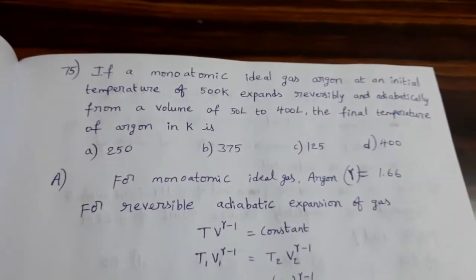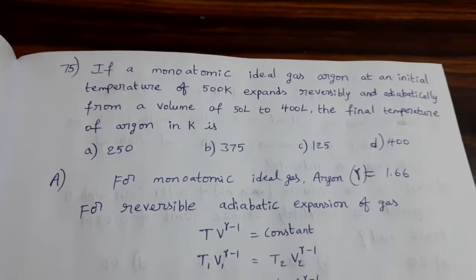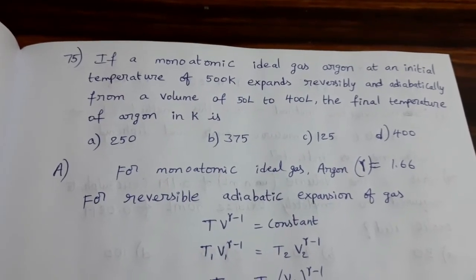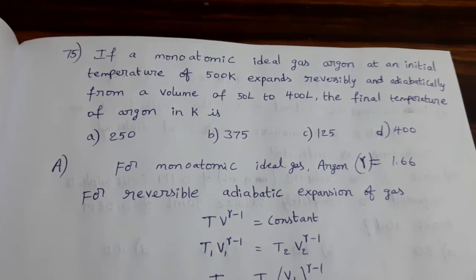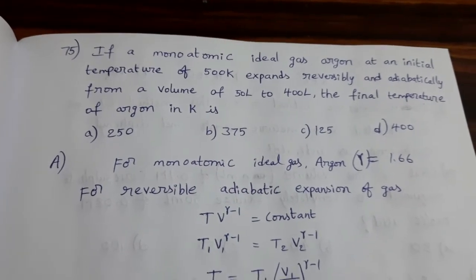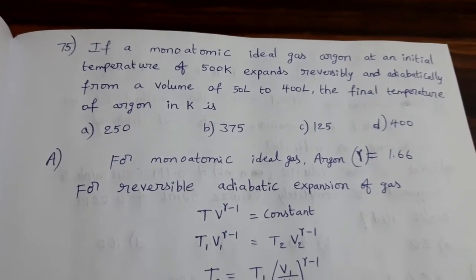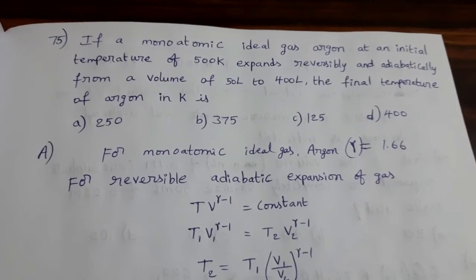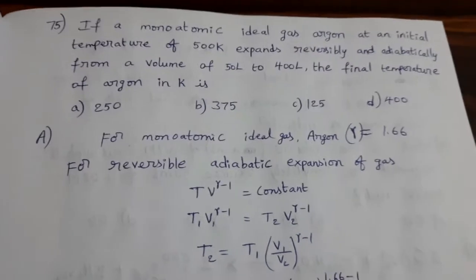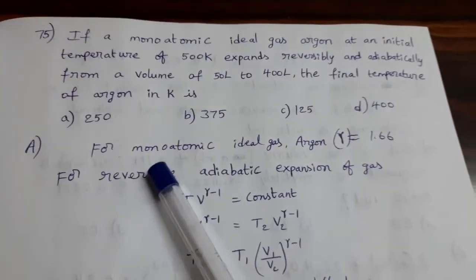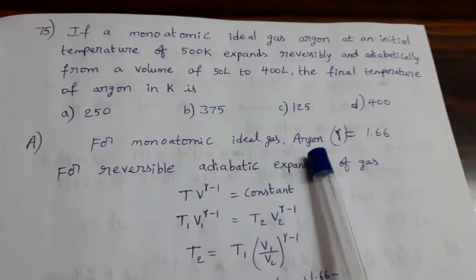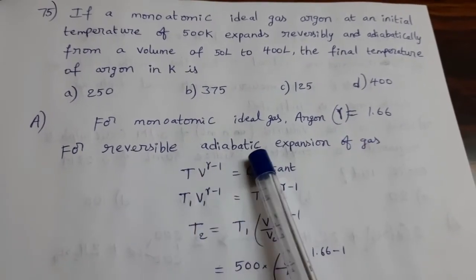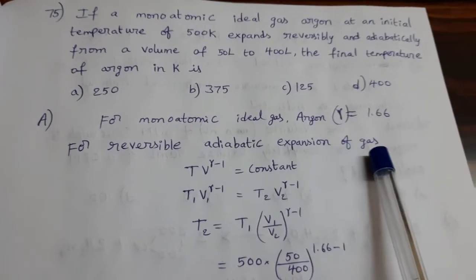If a monoatomic ideal gas argon at an initial temperature of 500 Kelvin expands reversibly and adiabatically from a volume of 50 liters to 400 liters, the final temperature of argon in Kelvin is. For monoatomic ideal gas argon, gamma value is 1.66. For reversible adiabatic expansion of gas,